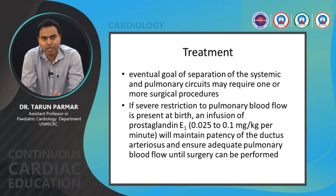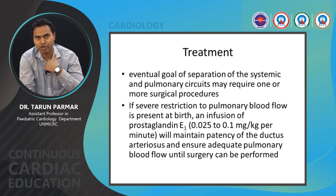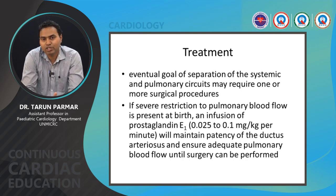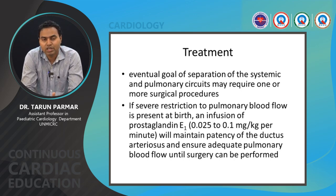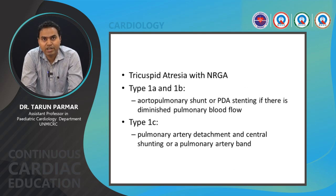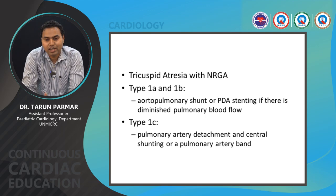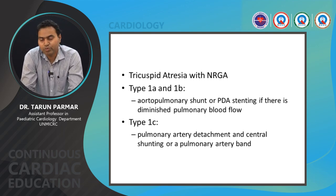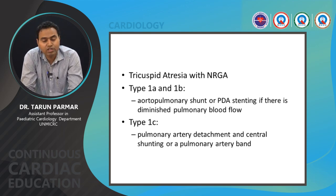The eventual treatment goal is separation of the systemic and pulmonary circuits requiring one or more surgical operations — BDG and Fontan completion. Initially, if the patient has severe restriction of pulmonary blood flow, prostaglandin E1 (PGE1) infusion is started to maintain ductal patency and adequate pulmonary blood flow until surgery. For tricuspid atresia with NRGA in Type 1A or 1B situations, an aortopulmonary shunt or PDA stenting is performed before the next stage, which may require PA banding and then a Glenn shunt.